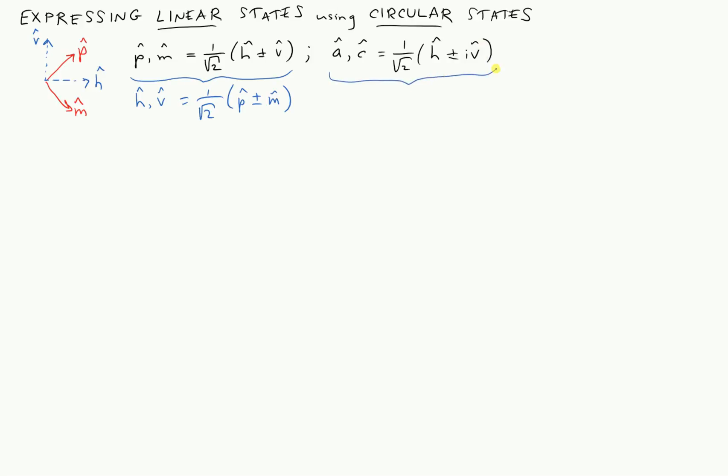Now what happens when we try to do the inversion here and write the horizontal and vertical states in terms of these? Let me start by solving for h-hat. It doesn't take much math to see that h-hat is 1 over root 2 anti-clockwise basis state plus clockwise basis state. You just add a and c together and you can see that the h's reinforce and the v's cancel each other out.